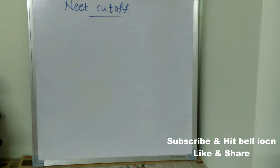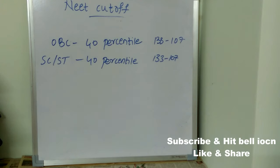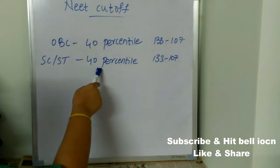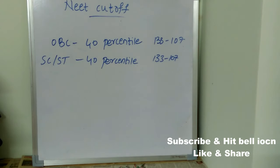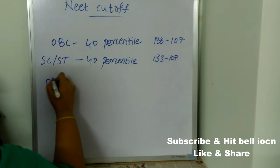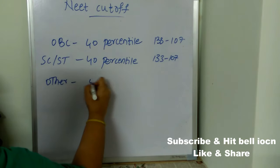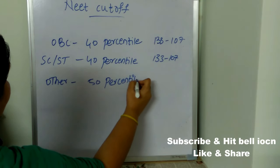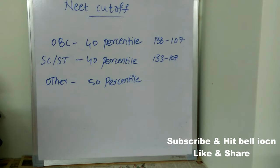Now let's see the NEET cutoff category-wise. For OBC, you must get at least 40 percentile and your marks should be in the range of 107 to 133. For SC/ST, you must get at least 40 percentile with marks in the range of 107 to 133. For other categories, at least 50 percentile will be the cutoff.